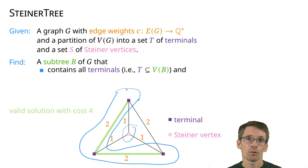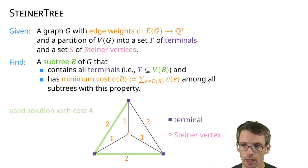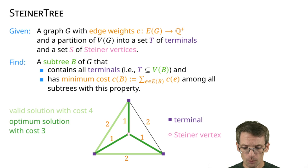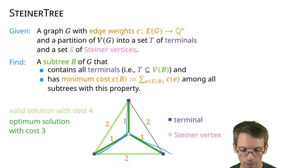Not surprisingly, we're interested in the minimum cost Steiner Tree. So we want to minimize the cost. Is this solution with cost 4 of minimal cost? No, because there's a better option — namely the one that in this case actually includes the Steiner vertex. This one has cost 3 and still all terminals are included.